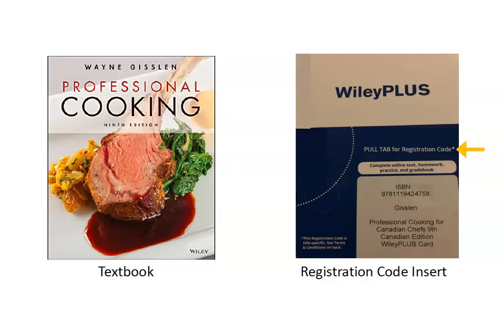When you purchase a textbook from the VCC bookstore for a course that uses Wiley Plus, it will also come with a registration code. This is your own unique code that allows you to view the online textbook and other study resources through the Wiley Plus website.